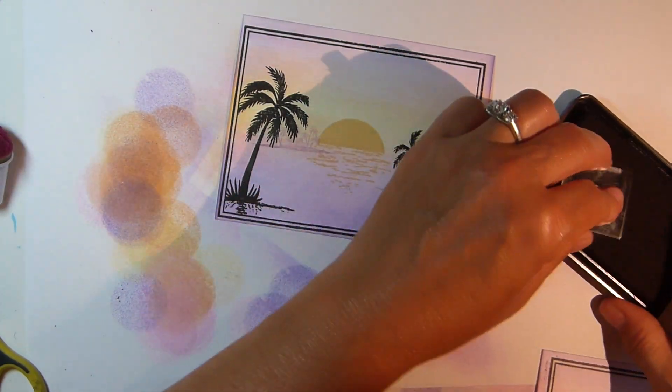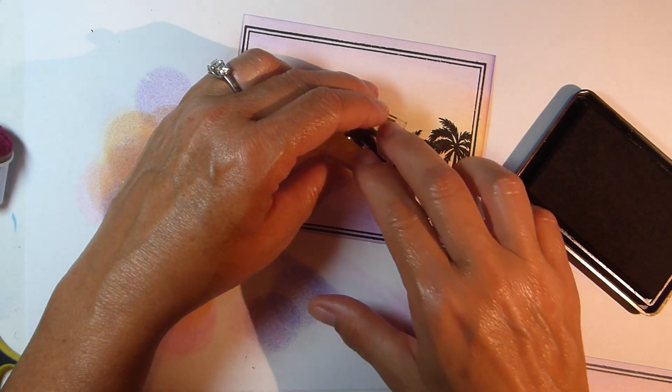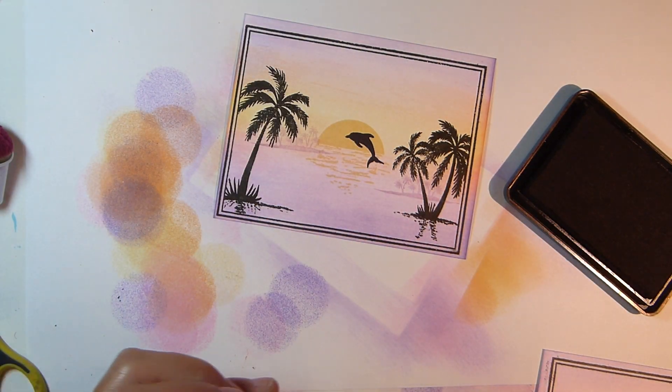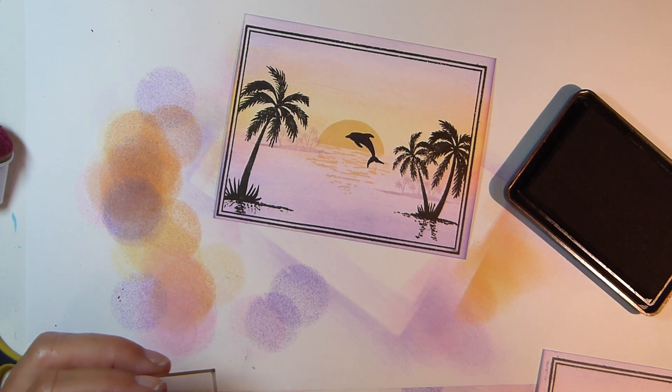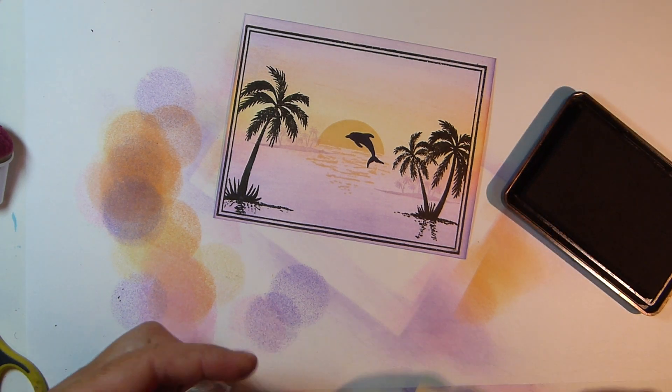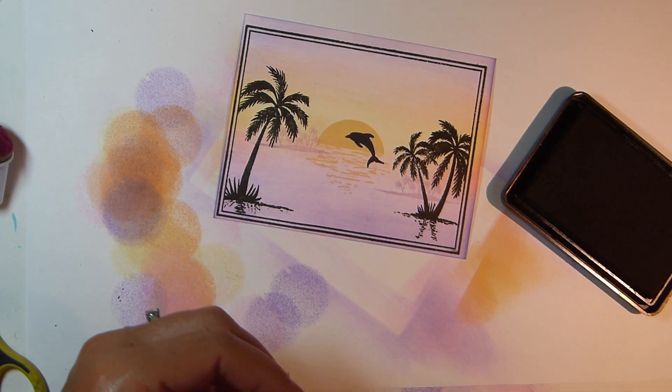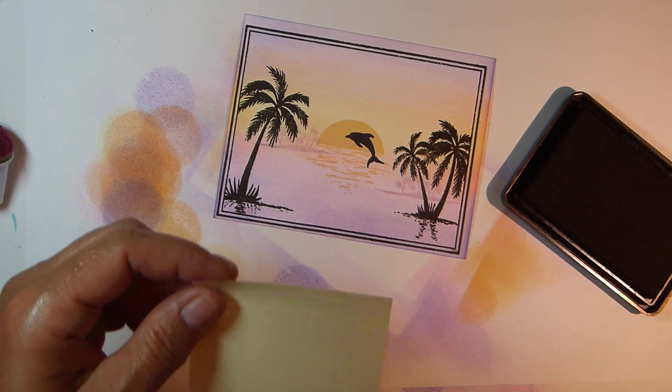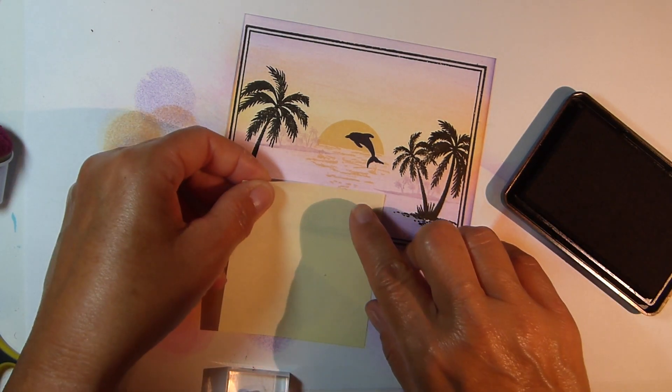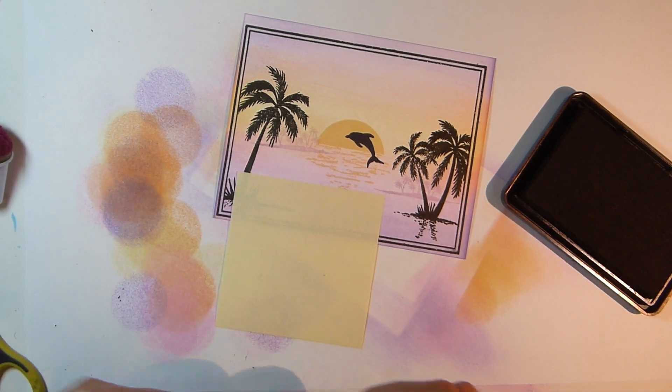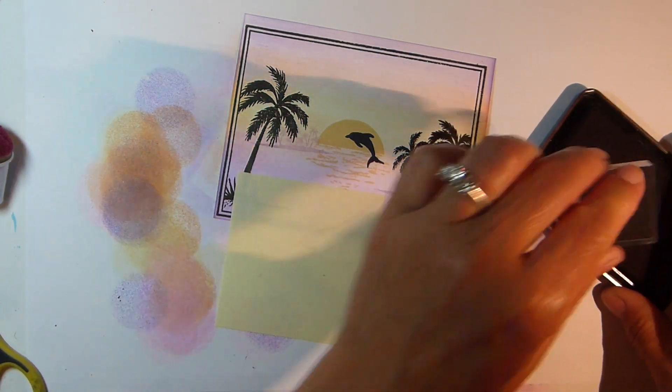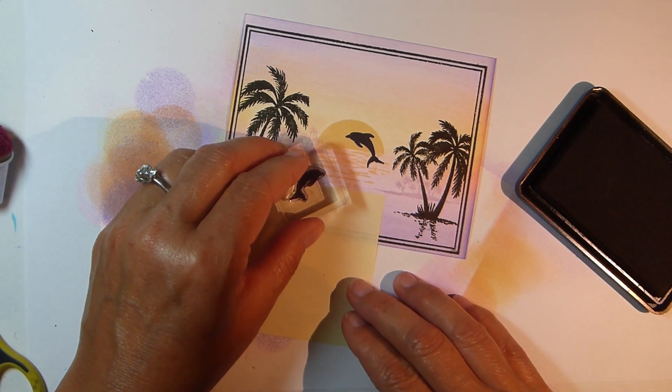Next, stamp the larger of the dolphin images using Gina K Black Onyx ink. Place a sticky note lower on the cardstock and then stamp the smaller dolphin image so that you get just a partial impression. We want him to look like he's floating in the water.